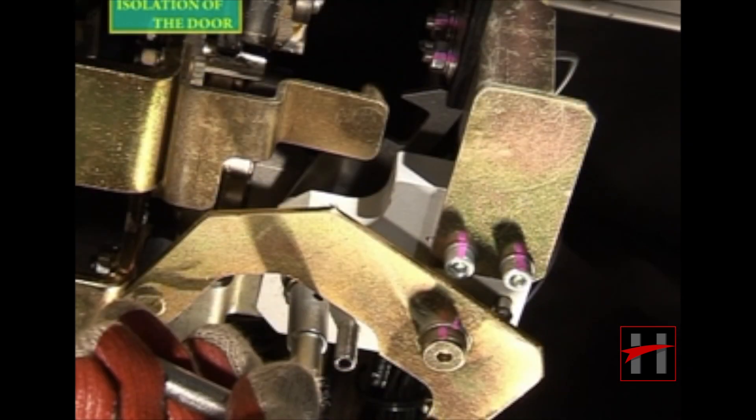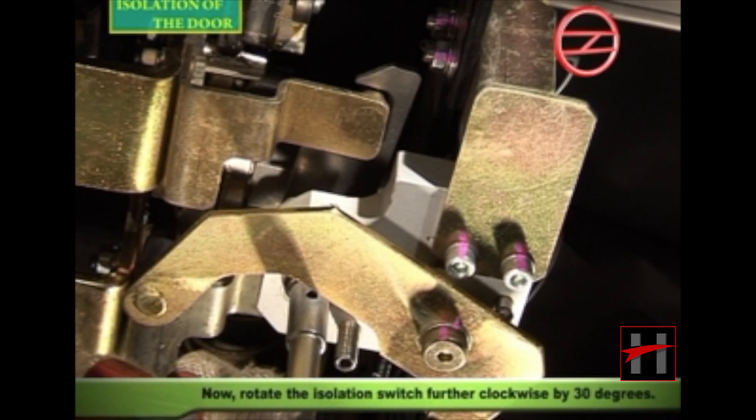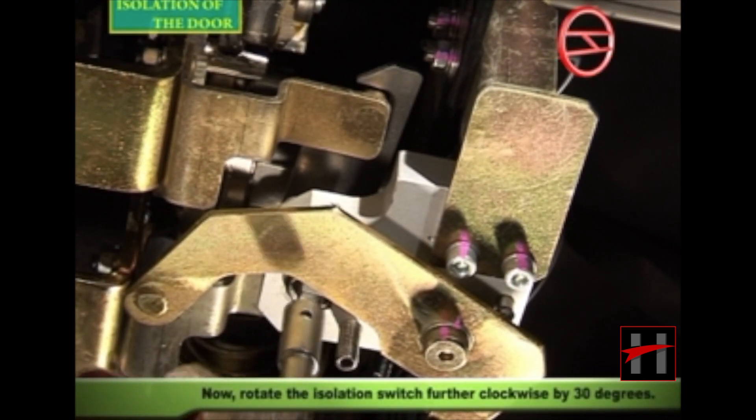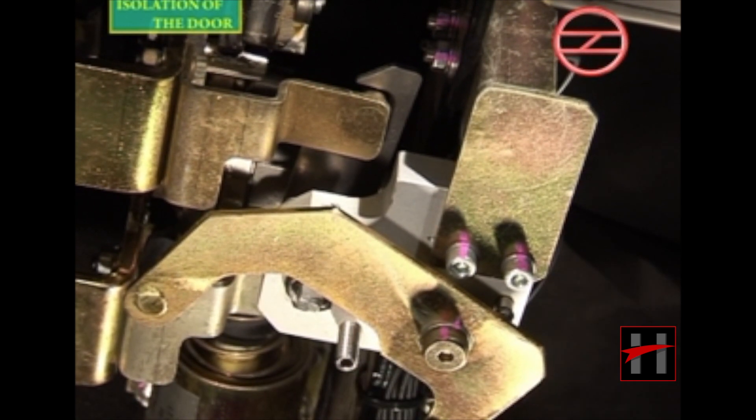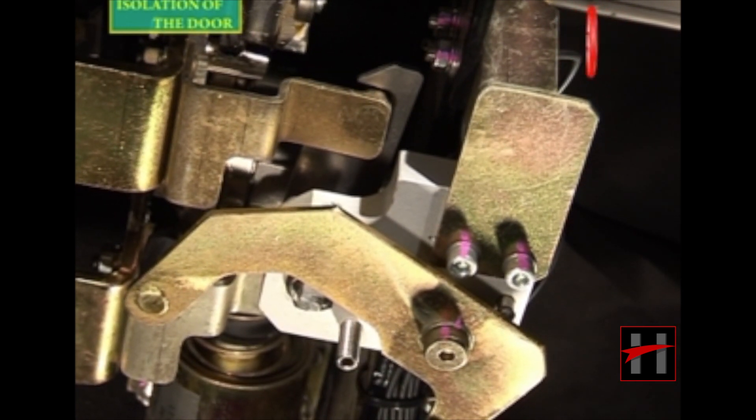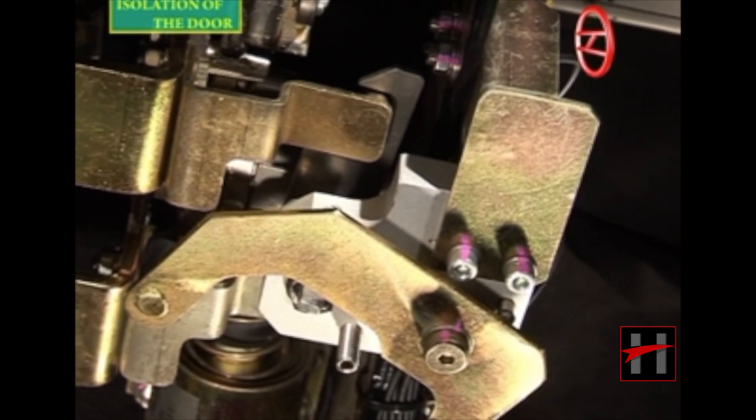Now rotate the isolation switch further clockwise by 30 degrees. In this case, the isolation hook locks both the drive brackets to restrict motion of the door leaves.